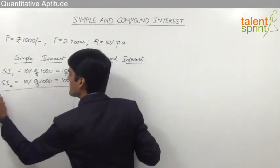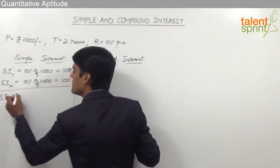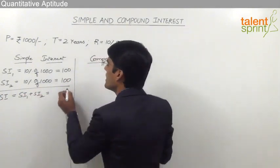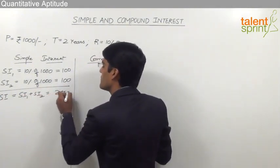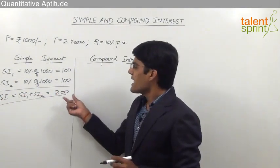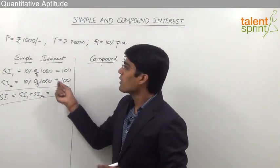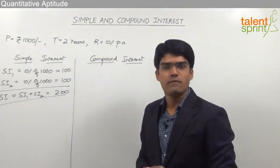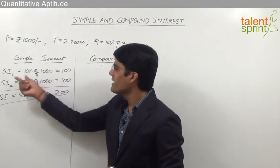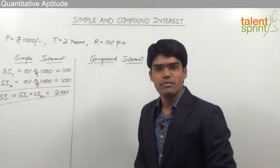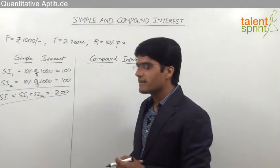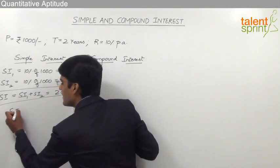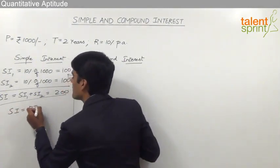The total simple interest is SI of first year plus SI of second year, which is 100 plus 100 = 200 rupees. So the borrower has to pay 200 rupees for borrowing 1000 rupees for 2 years at 10% per annum. This can also be calculated using the formula: SI = PTR/100.